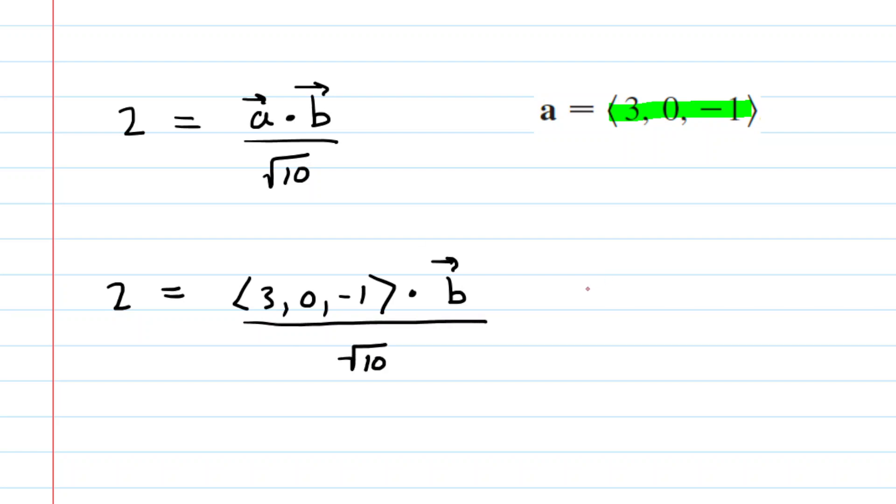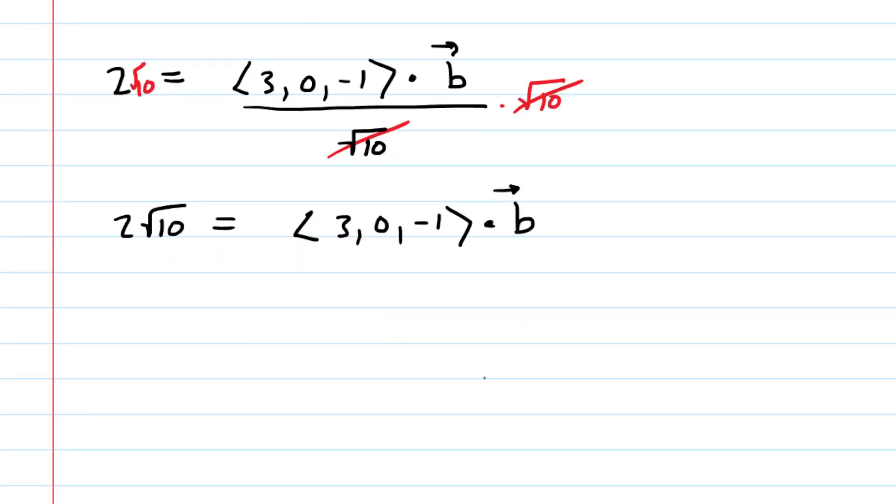We wish to find vector B, and there's going to be a lot of possible answers, but before we find it, we might wish to multiply both sides by the square root of 10, so that we can cancel that on the right-hand side.